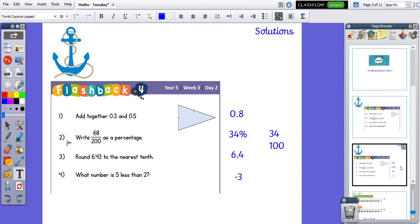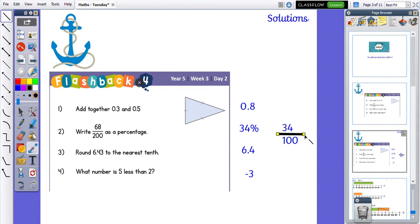Number two is a little bit trickier because we need to read the question carefully. It says write 68 over 200 as a percentage. However, we know that we can't do that straight away because percentage means out of 100, not out of 200. So I need to divide by 2. To get 100, I divide 200 by 2. What I do to the bottom I need to do to the top. So 68 divided by 2 gives me 34. The fraction would be 34 over 100, which is 34%.